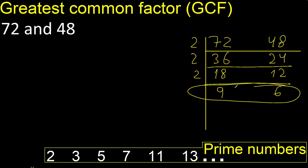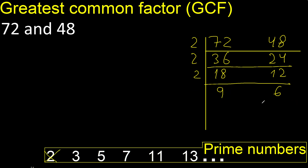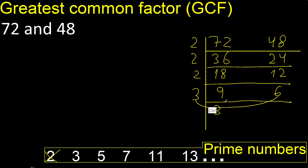Cannot be divided by 2 because 9 cannot be divided by 2. Divided by 3 is 3. Divided by 3 is 2.